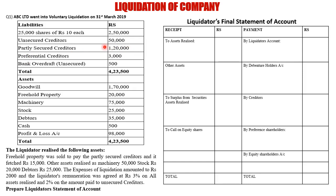Out of the partly secured creditors of Rs. 1,20,000, only Rs. 15,000 will be recovered from the property sale. The remaining Rs. 1,05,000 will turn out to be unsecured creditors — because it's partly secured and partly unsecured. This needs to be noted while solving the sum.